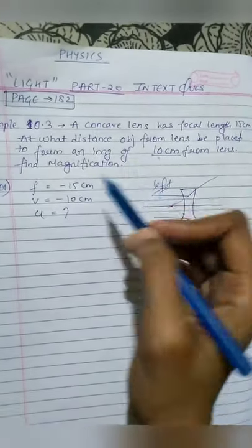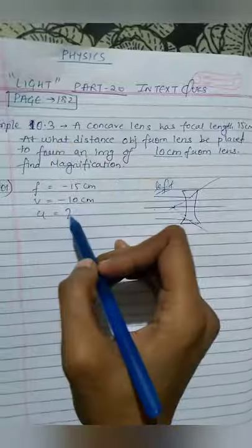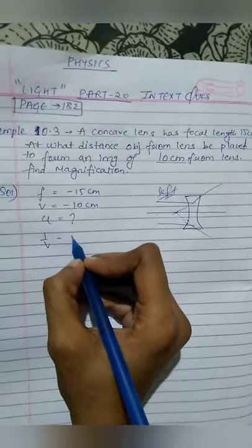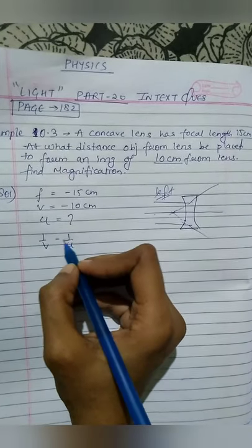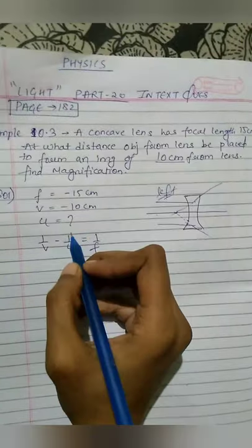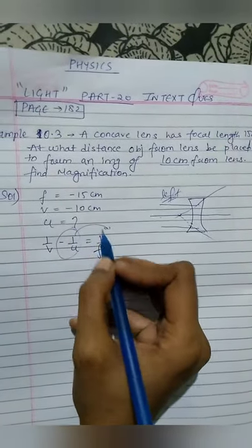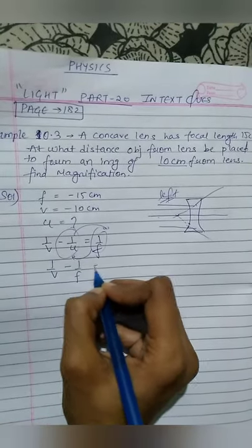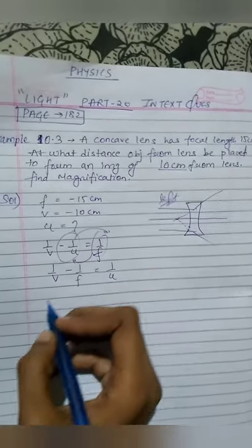And u, the object distance, is always on the left, so this value will be negative. The lens formula is: 1 by v minus 1 by u equals 1 by f. To find u, we rearrange: 1 by v minus 1 by f equals 1 by u. Now let's solve it.